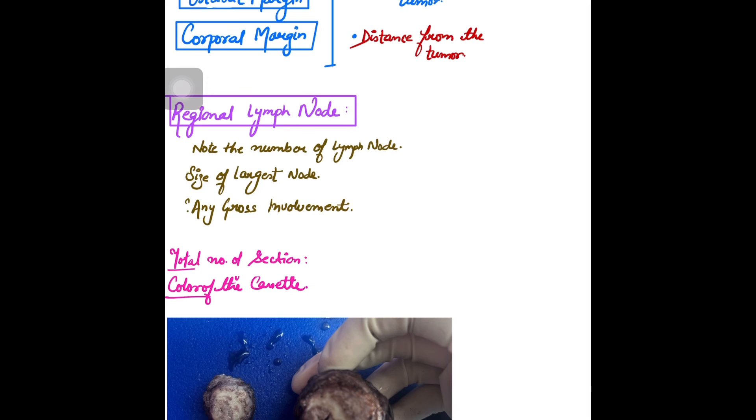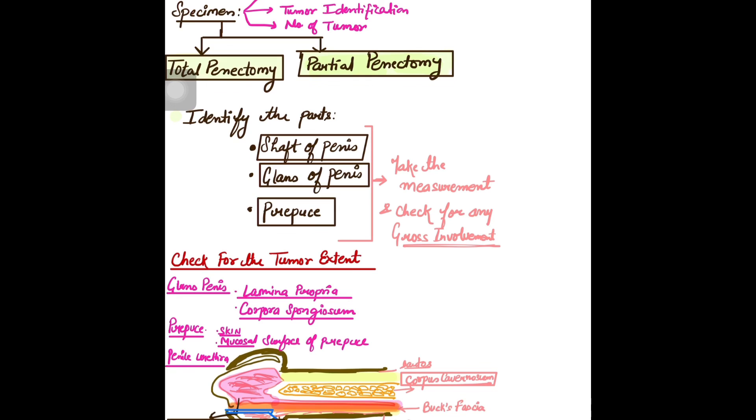If we see any gross involvement, we have to document it. This is all about penile tumor grossing. At the end of grossing, it's our job to mention the total number of sections taken, and if we are using different colors of cassettes in our department, we'll mention the color of cassettes used. This is all about the grossing of penile tumor. Stay tuned and keep studying. Thank you.